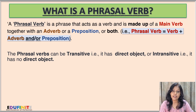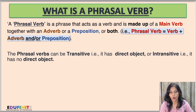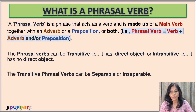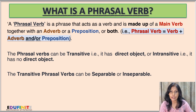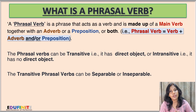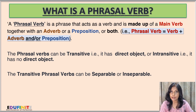Phrasal verbs can be transitive — that is, having a direct object — or intransitive — that is, having no direct object. Transitive phrasal verbs can be separable or inseparable. We'll do a quick recap on these topics, but if you need in-depth knowledge, I have made a separate video titled Phrasal Verbs Part 1, in which I have covered all these topics in detail. The link will be provided in the description box.